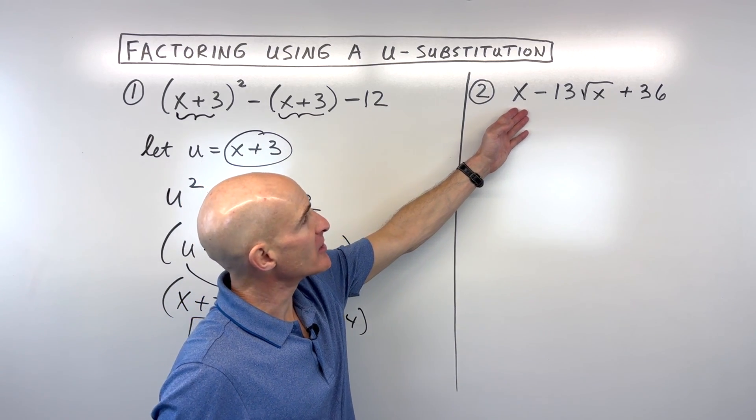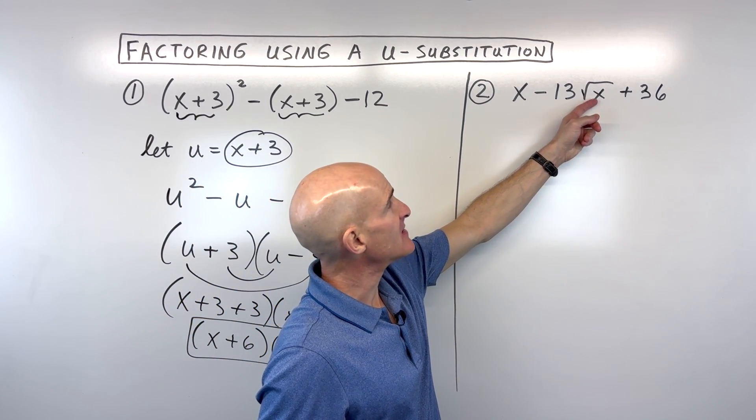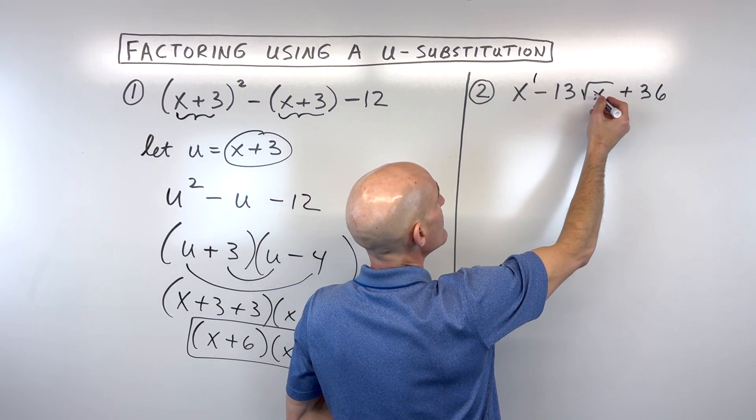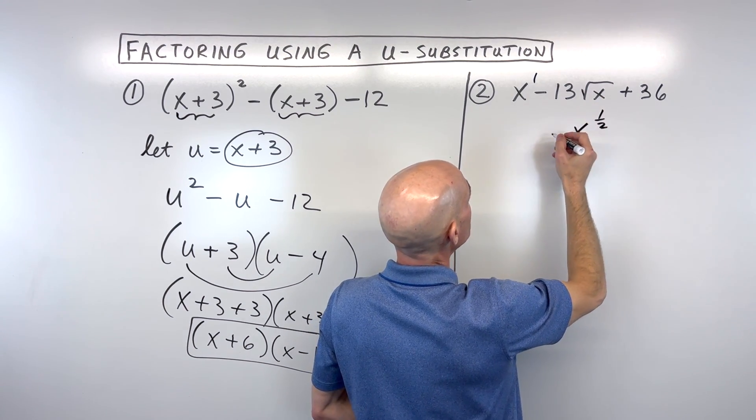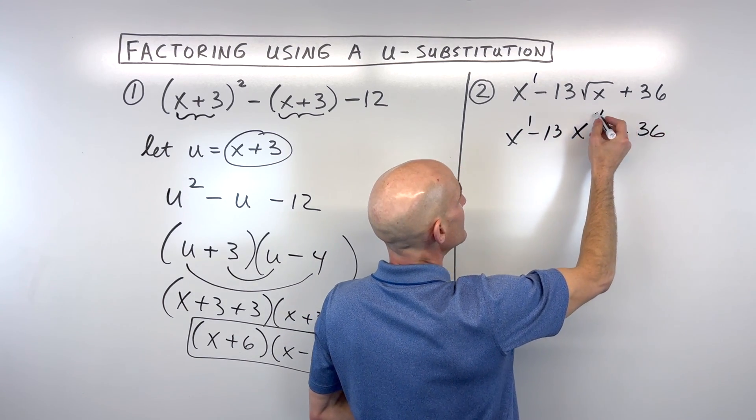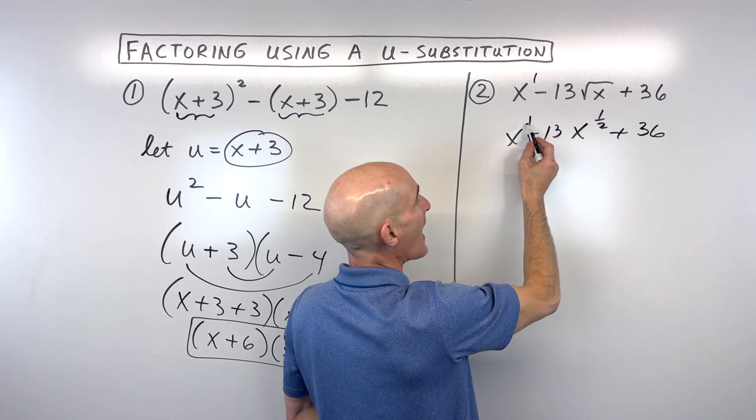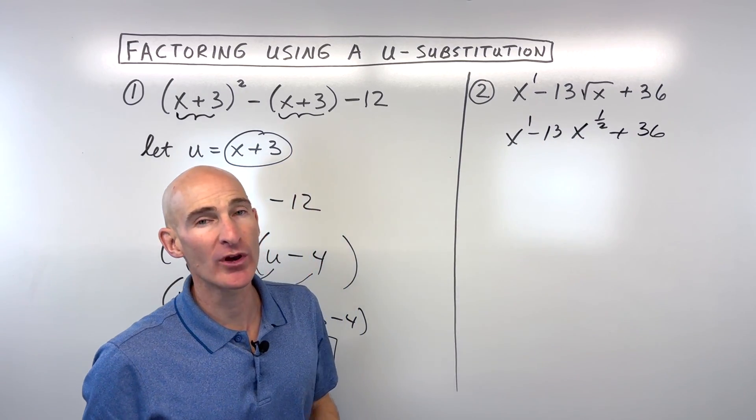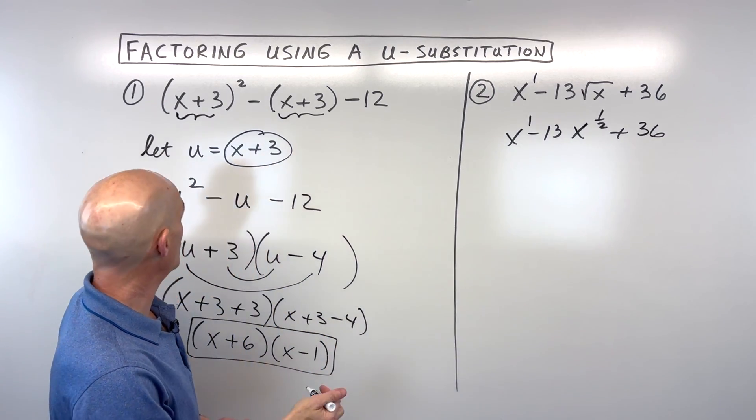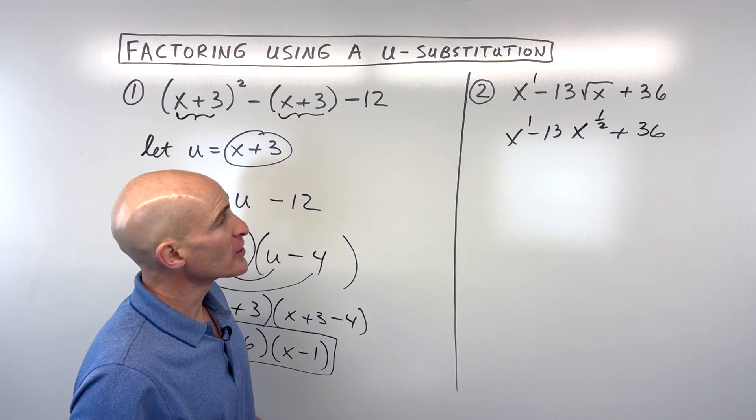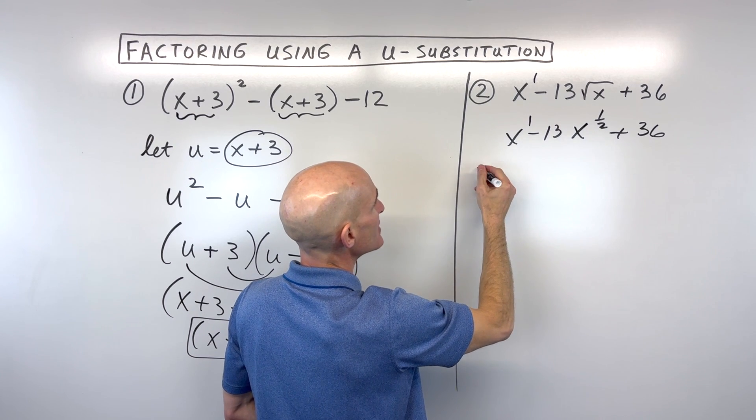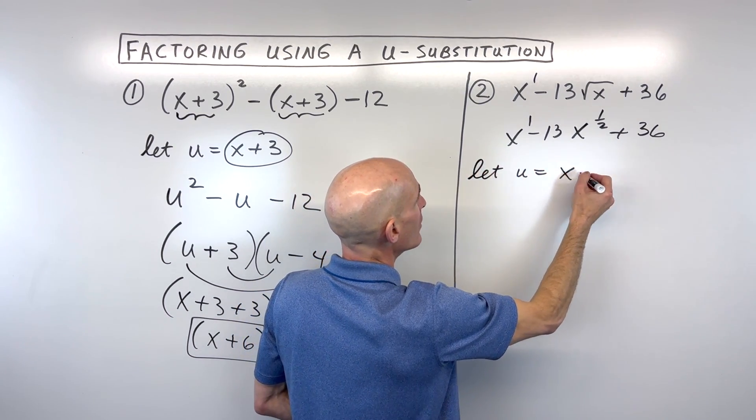So this one, what you'll notice here is that the square root of x is actually half of this exponent's, this first term's power. So what I mean by this is the square root of x is really like the one-half power, and see how this is to the first power? And so when it's in this form where the middle term's exponent is half of the leading term's exponent, we call it quadratic form. Because you can think of factoring it like you would factor a quadratic, kind of like we did over here with the u squared.